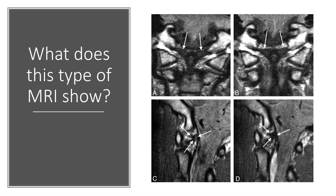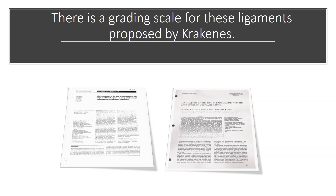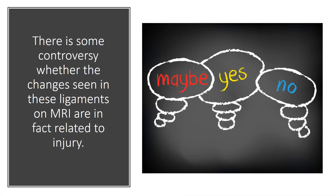So what does this type of very special MRI show? It can show the alar ligaments, as shown here, in some detail — not fantastic detail like we can see the ACL ligament in the knee, but pretty good detail. There's a grading scale for these ligament injuries proposed by a neuroradiologist by the name of Crocinus. There is some controversy whether or not the changes seen in these ligaments on MRI are in fact related to injury, and this goes back and forth. The bottom line is it depends on who you look at and when.